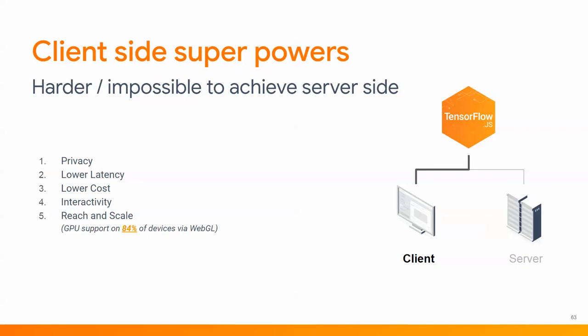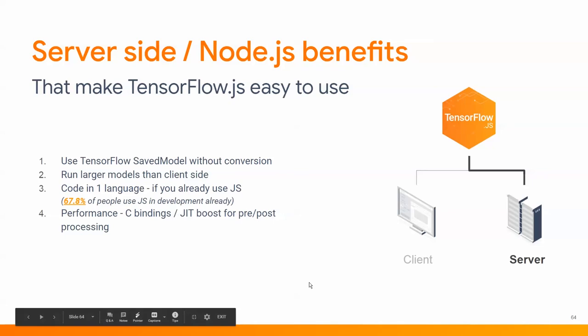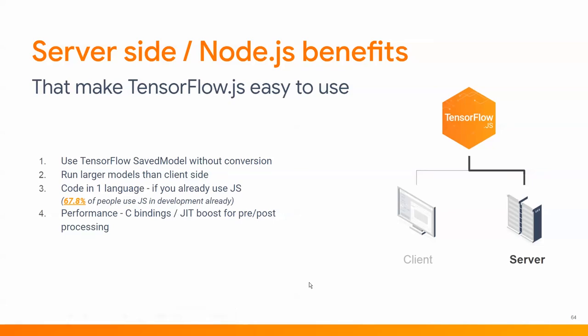Flipping to the server side for a moment, there are also some benefits if you choose Node.js. You can use the TensorFlow SavedModel without conversion. You can run larger models than on the client side due to Chrome's per-tab memory limitations. And it allows you to write code in just one language — JavaScript. According to the Stack Overflow Survey of 2019, 67% of people use JavaScript in some capacity. And you get the just-in-time compiler performance boost in Node.js over using machine learning in Python.